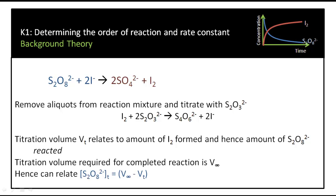The titration volume required for the complete reaction — when this reaction is totally over — would be V∞. That is the amount of thiosulfate, S₂O₃, needed to completely react with all of the iodine formed. The amount of persulfate at any time T will be equal to the infinity titration minus the amount titrated at any particular time — in other words, how much is unreacted. So the concentration of persulfate at time T equals V∞ minus Vt. We're relating S₂O₃²⁻ to the concentration of iodine, and iodine back to the concentration of persulfate, S₂O₈²⁻.